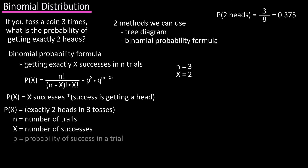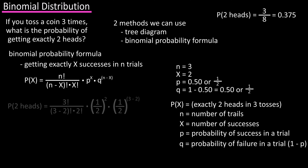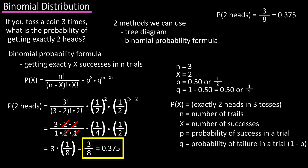In the formula, p equals the probability of success in an individual trial, and in our problem the probability of a success, getting a head on the flip, is 50% or 1 over 2. And in the formula, q equals the probability of a failure in a single trial, which is 1 minus p, which equals 50% or 1 over 2. Now we plug into the formula: probability of two heads equals 3 factorial divided by 3 minus 2 factorial times 2 factorial, times 1 over 2 squared, times 1 over 2 to the 3 minus 2. And calculating this out, we get 3 over 8, or 0.375, same as the tree diagram.